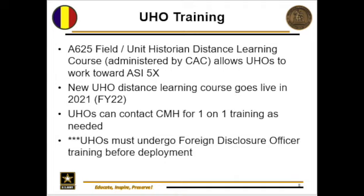Moving on to UHO training — we will work with your UHOs to ensure they are equipped and ready to do their jobs. There is a distance learning course called the A625 Field and Unit Historian Distance Learning Course, administered by the Combined Arms Center, that allows UHOs to work toward earning Skill Identifier 5 X-ray. That course is worth three credit hours, taught by Mr. Gary Linhart, and it's as simple as going to the web link and enrolling. We are also working on a new two-day distance learning course called UHO Fundamentals, going live hopefully by fiscal year 2022.